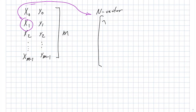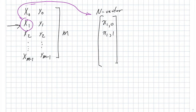Let's draw that out and introduce some more notation. So big X1 I'm going to write as a column vector. The first element is little x 1 comma 0 — the 1 comes from the fact that we have big X1, and 0 is the zeroth element. So it's X1 comma 1, X1 comma 2, and on down the line to X1 comma N minus 1. So this is an N-dimensional vector.